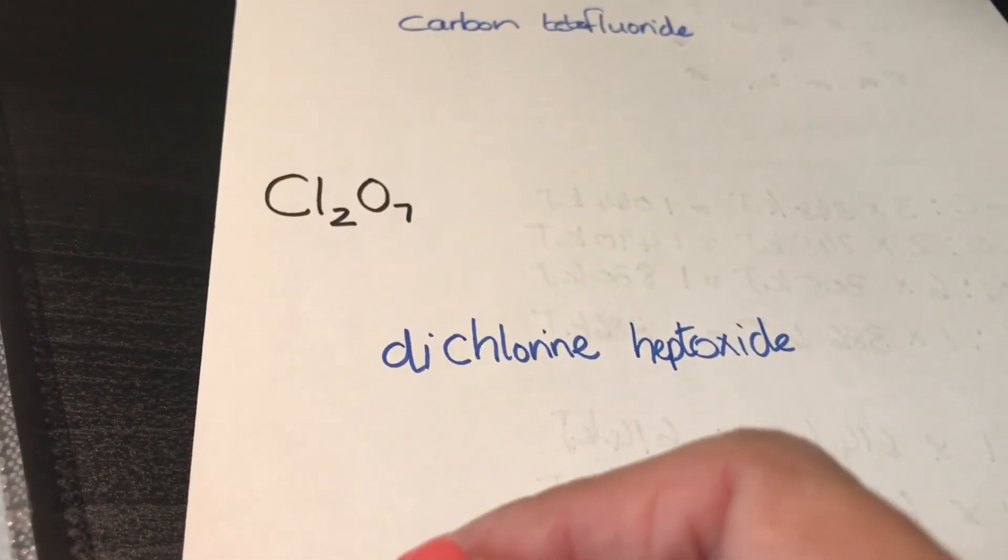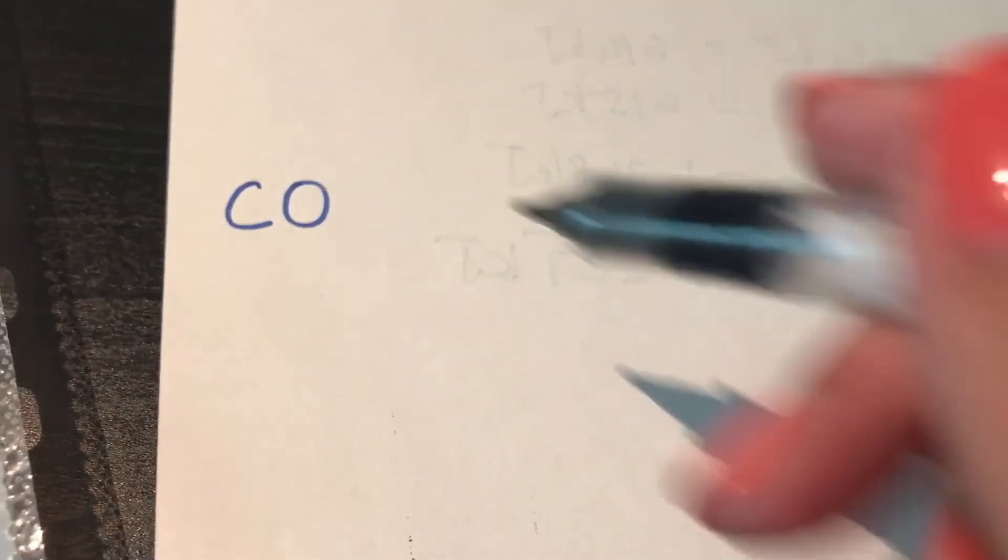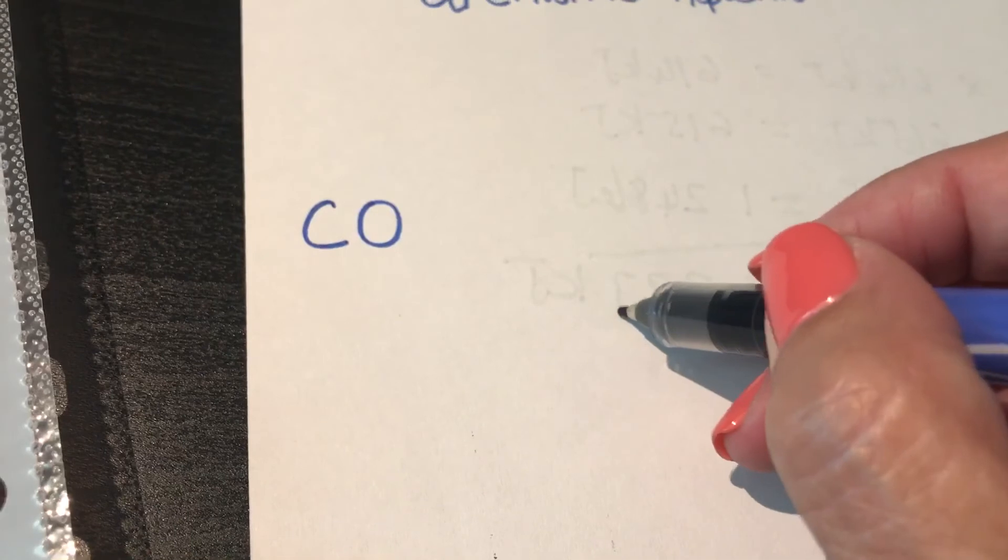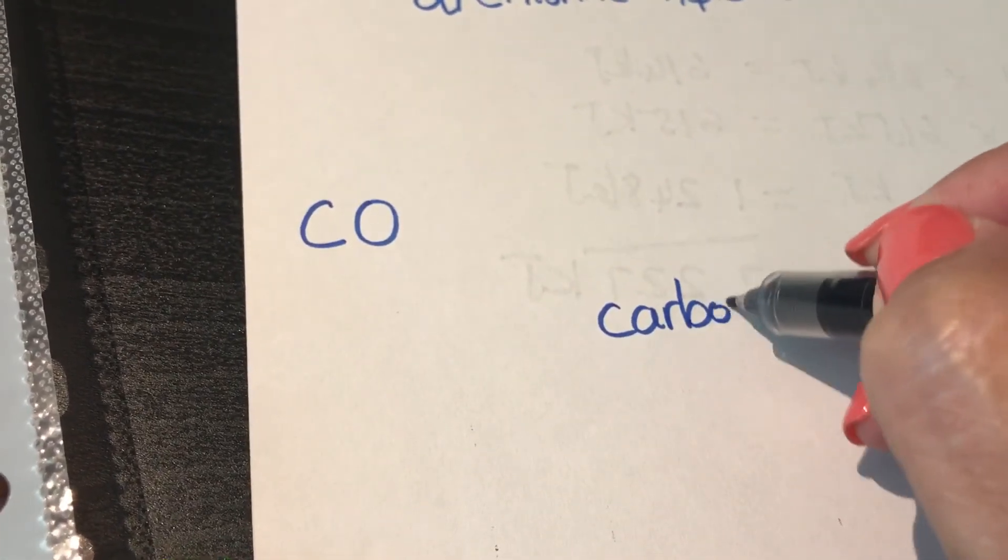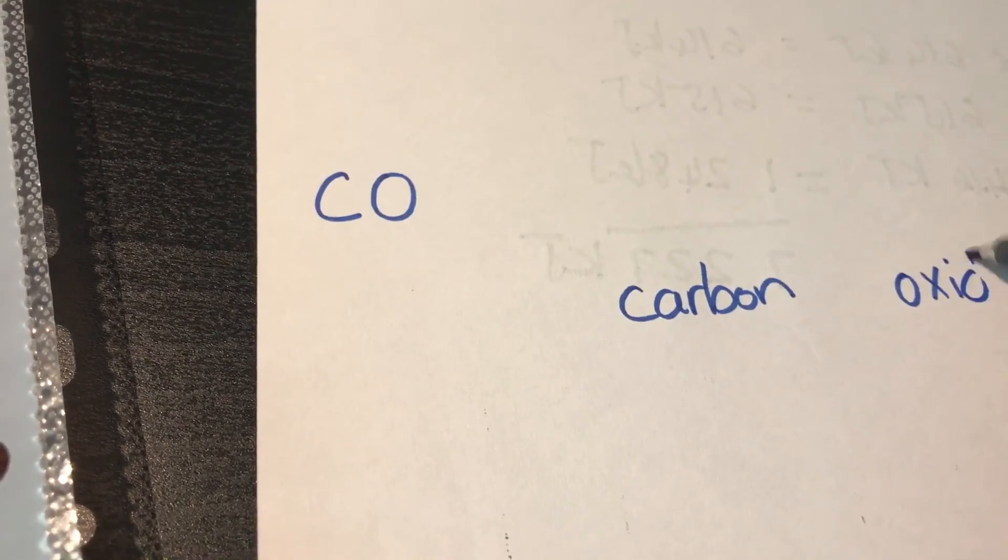If I have something like this - carbon and oxygen - this one does not become monocarbon. Again, I apply the rule. The first one is carbon. The second one is oxygen, which becomes monoxide.